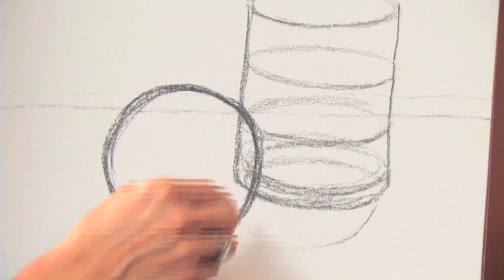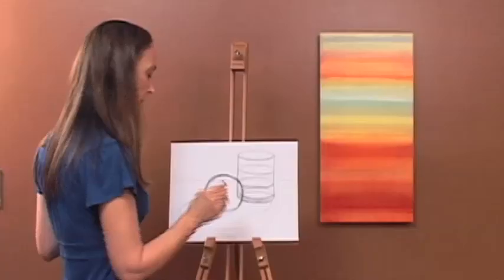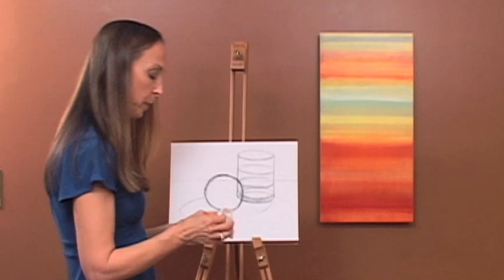We're also going to draw two sets of shadows. A shadow coming from the cylinder, and a shadow coming from the sphere. So there's a light drawing.